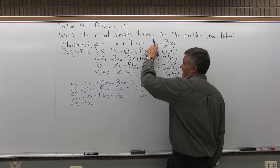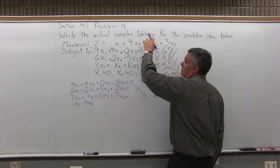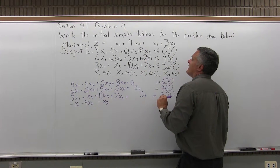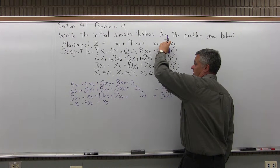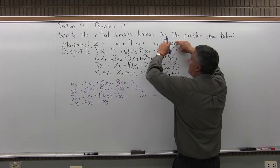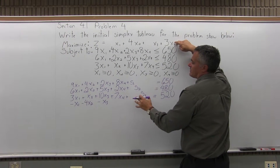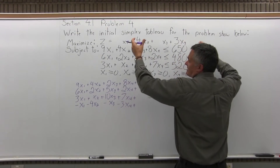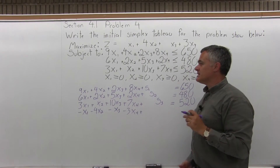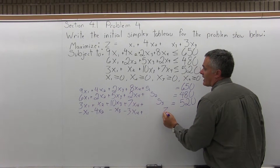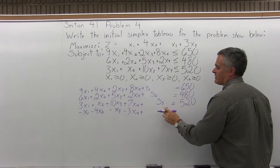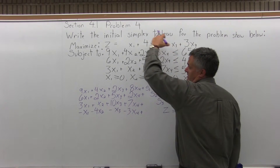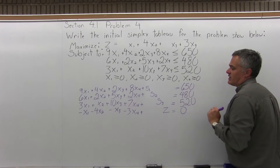Then x3 comes next — it's 1x3 on the right side, which moves to the left as negative x3. Finally, 3x4 is on the right side and moves to the left as negative 3x4. There's no need to add a slack variable since it's already an equation. The z variable stays in the equation, and since everything has been moved to the left side, the right-hand side of the objective function equals 0.